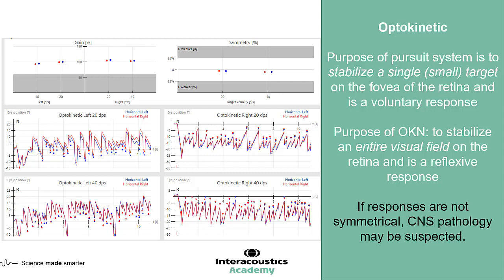It's worth mentioning that optokinetic testing, out of all the oculomotor examinations, has the least specificity for identifying central nervous system pathology. However, as an additional supportive test within the oculomotor examination, we can see where it shows changes — potentially comparing pursuit and optokinetic findings — to determine whether we have consistent findings across our ocular motor examination.